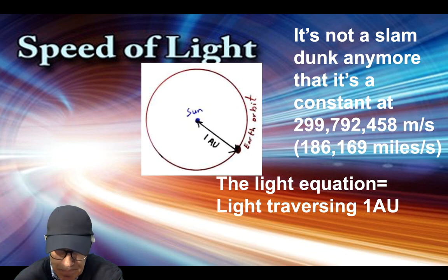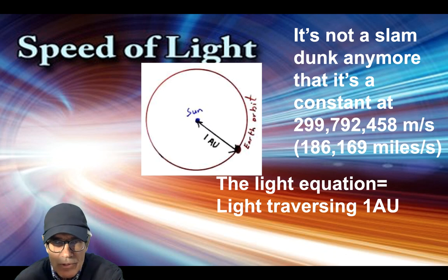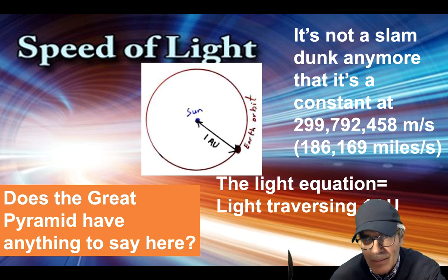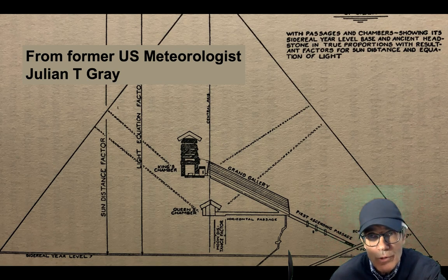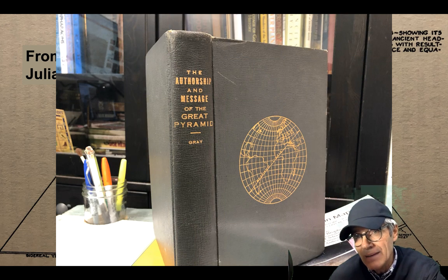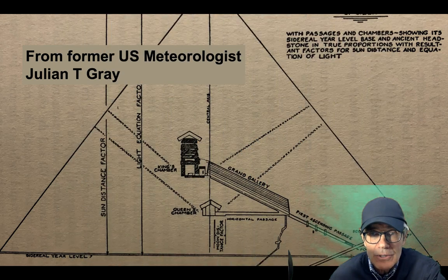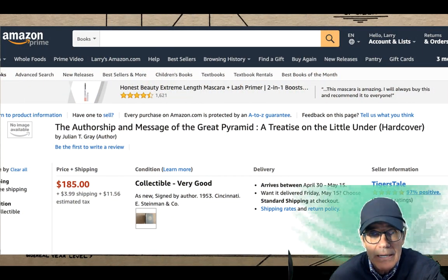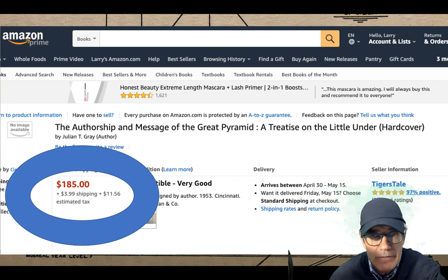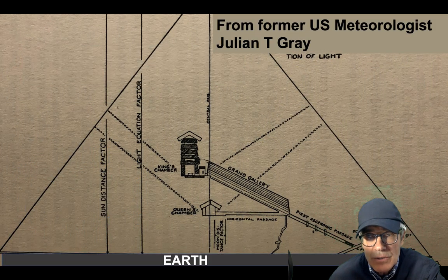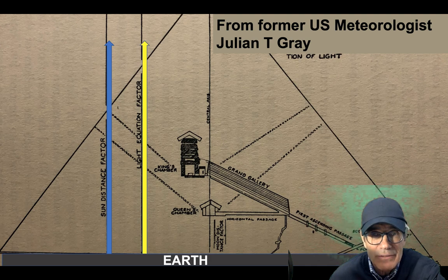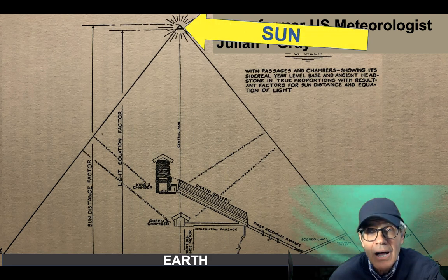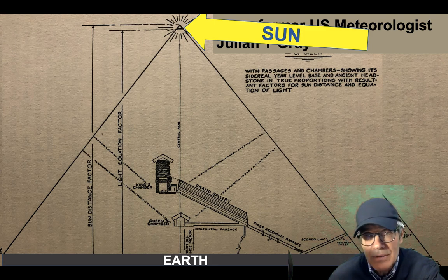Here's the light equation: that phrase means the amount of time it takes for light to go from the sun to the earth — that's one astronomical unit. Does the Great Pyramid have anything to say about the speed of light? A former US meteorologist, Julian Gray, wrote a book in 1953 called 'The Authorship and Message of the Great Pyramid.' You can get that book right now for about 200 dollars from a rare bookstore. So here's what Julian Gray says: there's a sun distance factor and a light equation factor.